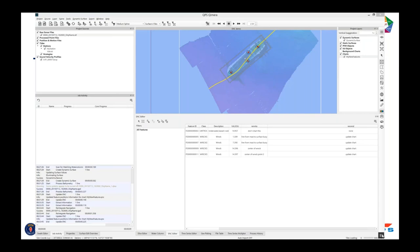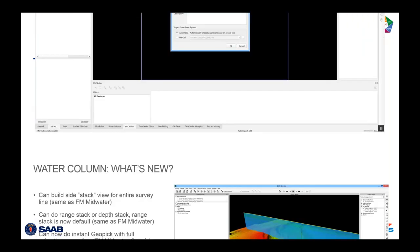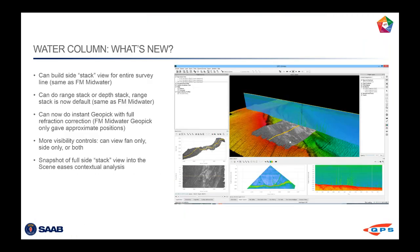Let's go to the next chapter: water column. Water column is stuff we had when we first released Chimera — you could look at the water column data, but that was about it. In Chimera 1.4, you could create points in the same way as in FM Midwater, extract objects and seeps and shipwrecks, and they would all be rigorously ray-traced and georeferenced using the same engine Chimera uses for regular soundings from Quincy.